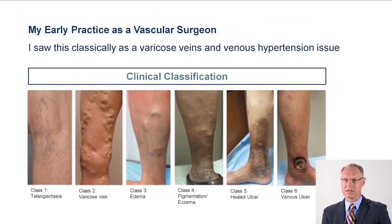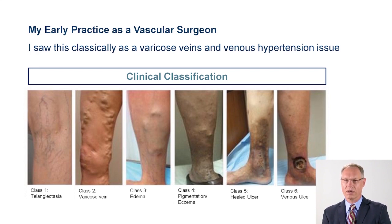As a practicing vascular surgeon, I typically evaluated varicose veins in an isolated fashion, looking at the classic CEAP, standing for Clinical Etiology, Anatomic and Pathophysiology Clinical Classifications. Class I is telangiectasias. Class II is ordinary varicose veins. Class III is the presence of edema. Class IV is development of hyperpigmentation and skin changes such as eczema. Class V is a healed venous ulcer, and Class VI is the presence of a venous ulcer.